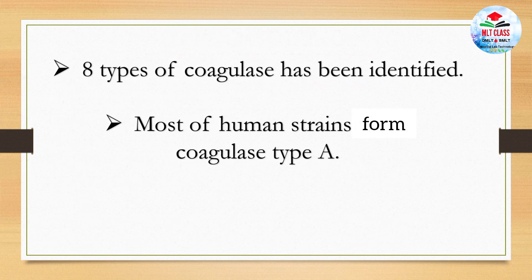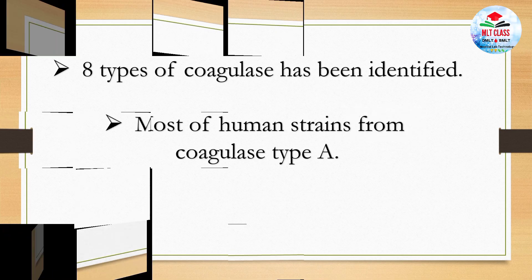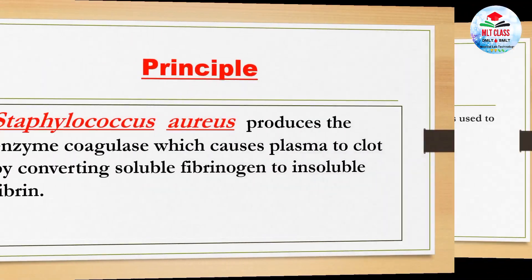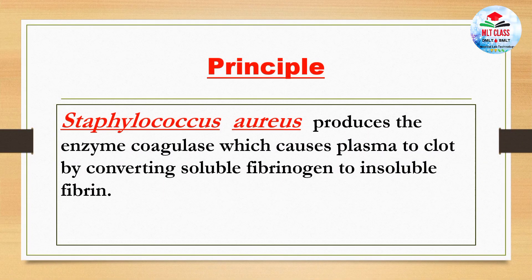Eight types of coagulase have been identified. Most human strains form coagulase type A. The coagulase test is used to differentiate Staphylococcus aureus from other Staphylococcus species. Both free and bound coagulase can be detected by this test. The principle is that Staphylococcus aureus produces the enzyme coagulase, which causes plasma to clot by converting soluble fibrinogen to insoluble fibrin.